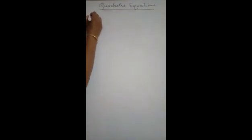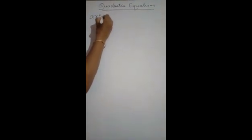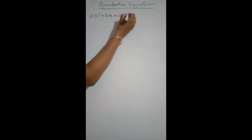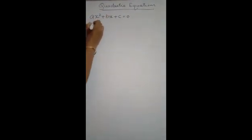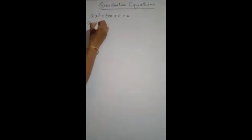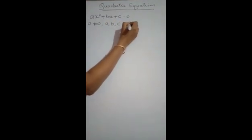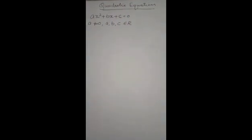Have you heard about quadratic equations? It is a second degree equation with one variable. The standard form of the quadratic equation is ax squared plus bx plus c is equal to 0, where a is not equal to 0, and a, b, c belong to the set of real numbers.